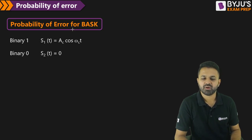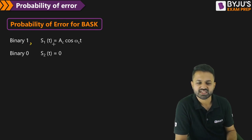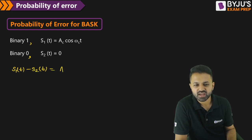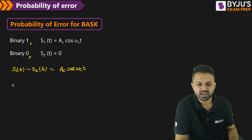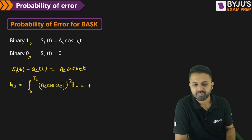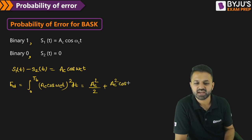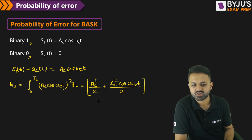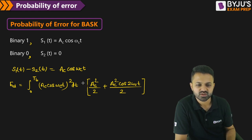Now coming to the probability of error of BASK. Suppose for binary 1 we are transmitting AC·cos(ωC·t), and for binary 0 we are transmitting 0. So the difference S1 minus S2 is AC·cos(ωC·t). To calculate ED, that is the integration from 0 to TB of AC·cos(ωC·t) mod squared DT. Expanding the cosine squared term, the whole integration runs from 0 to TB.